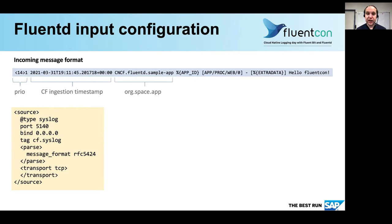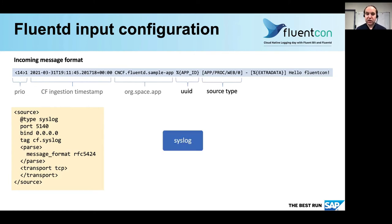Then there is information on the origin of the message: the org name, the space name, and the app name. Unfortunately, all three kinds of information are a little bit unhelpful if you really want to distinguish the log messages. The first really useful thing is the app ID — I use a placeholder here for the UID that is usually there. And the next thing is the source type, which I will explain later on. All of this you get just from the syslog configuration. But there are more parts: the first is the so-called structured syslog data, which contains all the CF metadata to attribute the logs to their source. I will explain how to parse this part in the next slide.